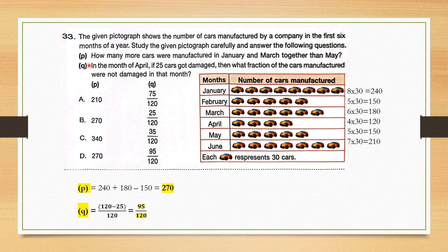How many more cars were manufactured in January and March together than May? January has 240 and March has 180; subtracting May which is 150 gives 240 plus 180 minus 150 equals 270. For statement Q: in April, if 25 cars got damaged, what fraction of cars manufactured were not damaged? April manufactured 120 cars, 25 damaged, so remaining are 120 minus 25 equals 95, and the fraction is 95 by 120. So P is 270 and Q is 95 by 120, and the correct answer is option D.